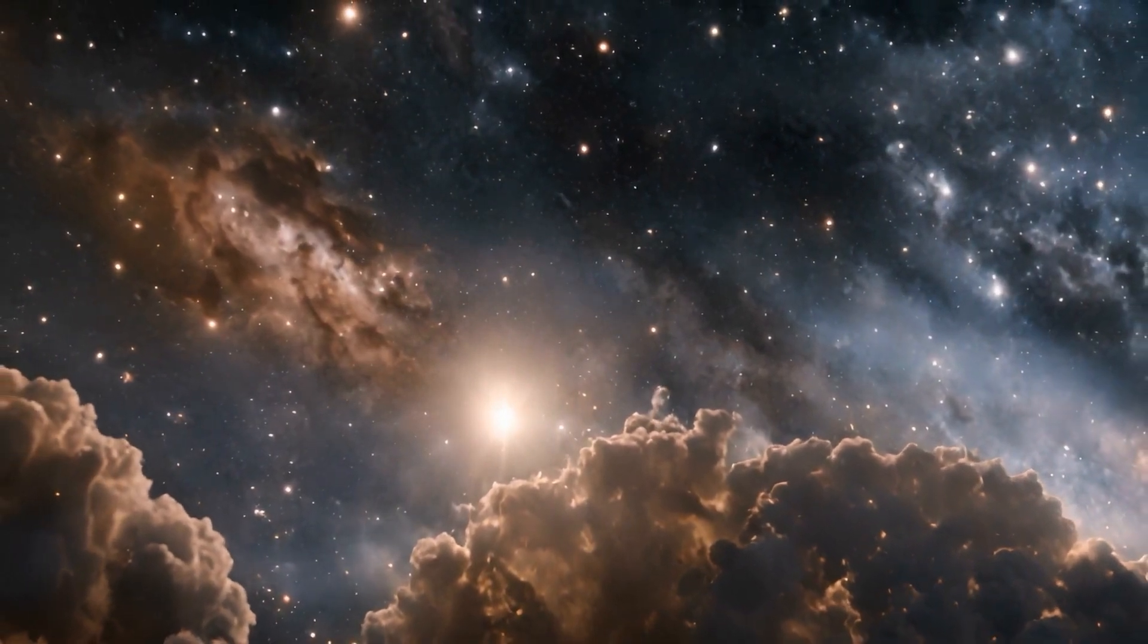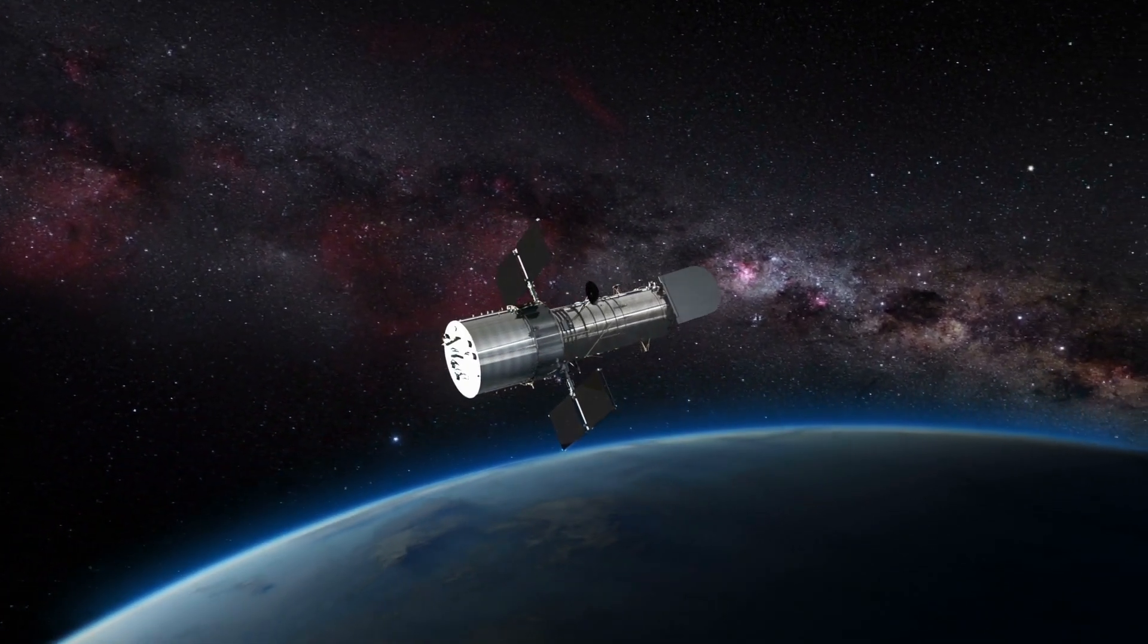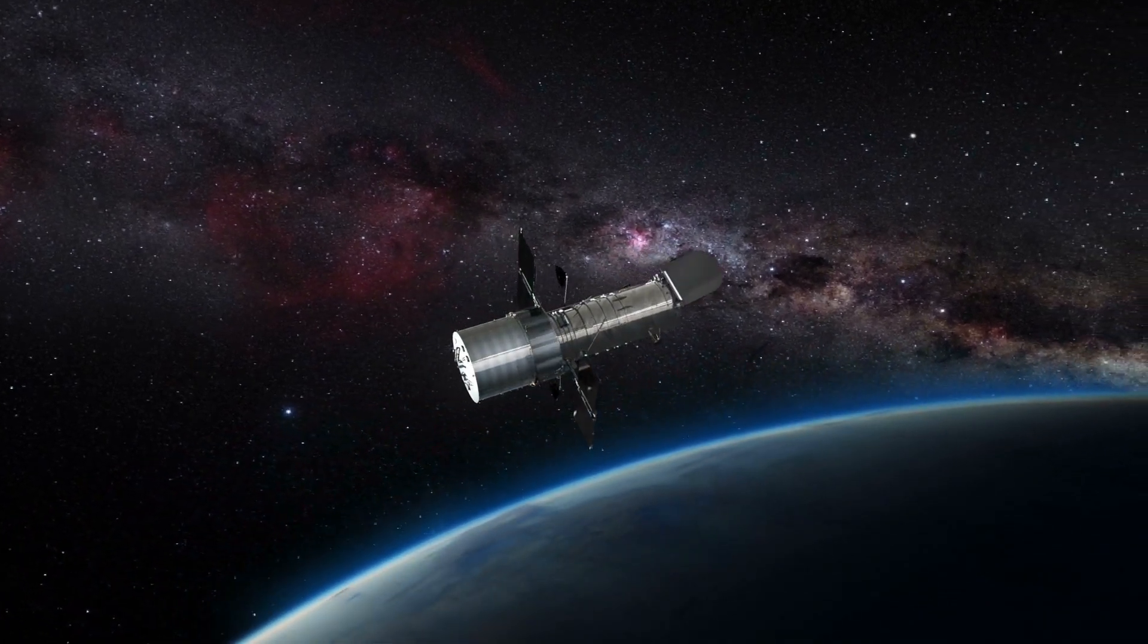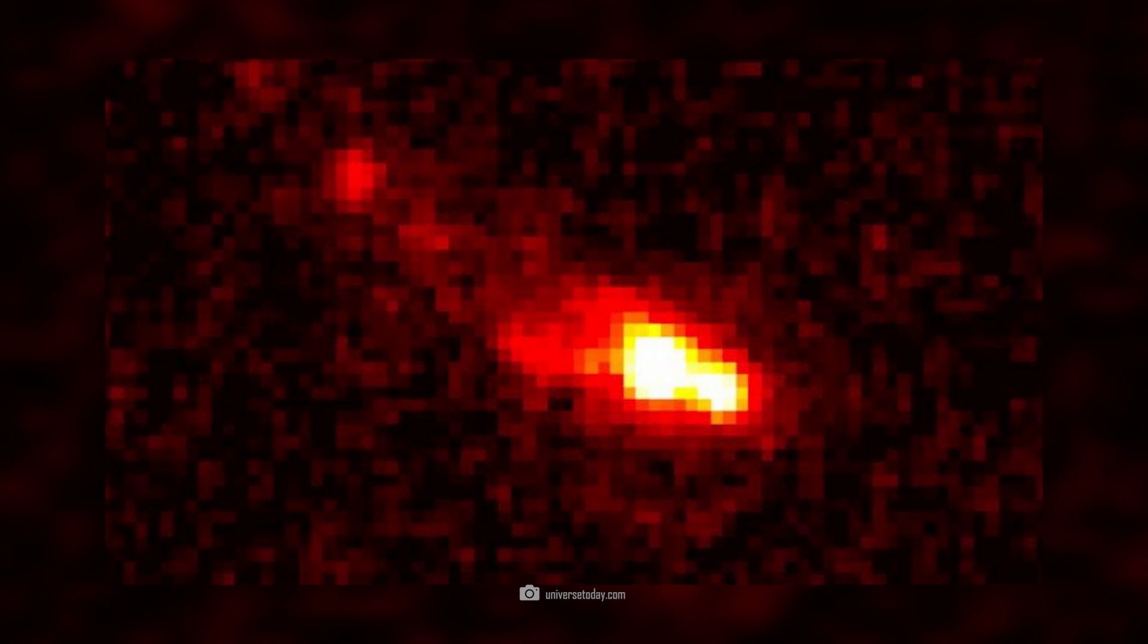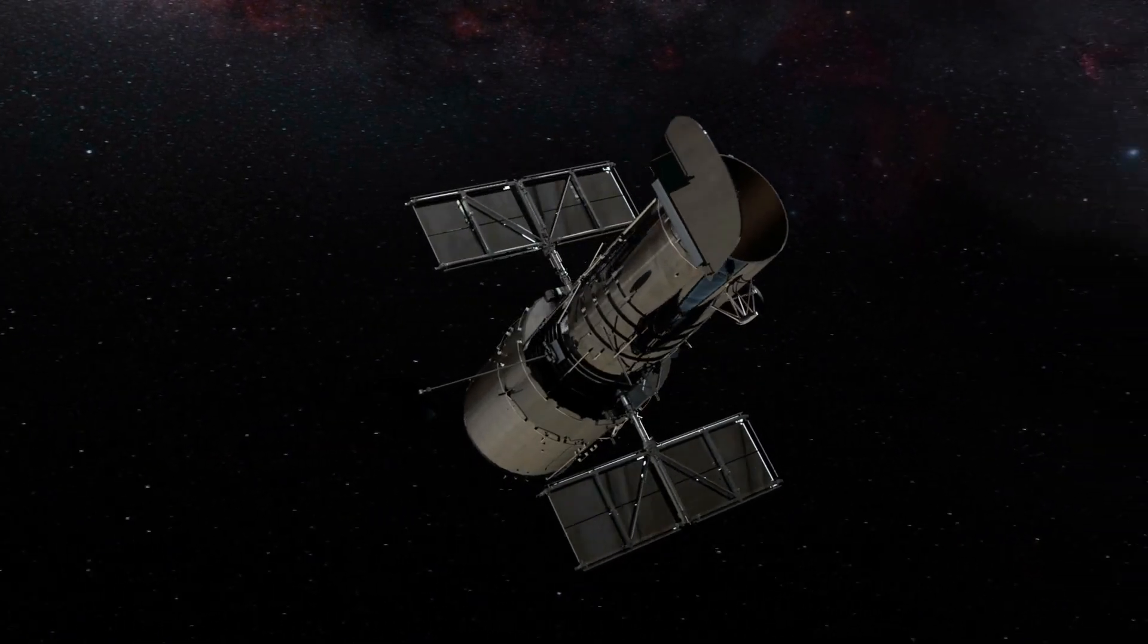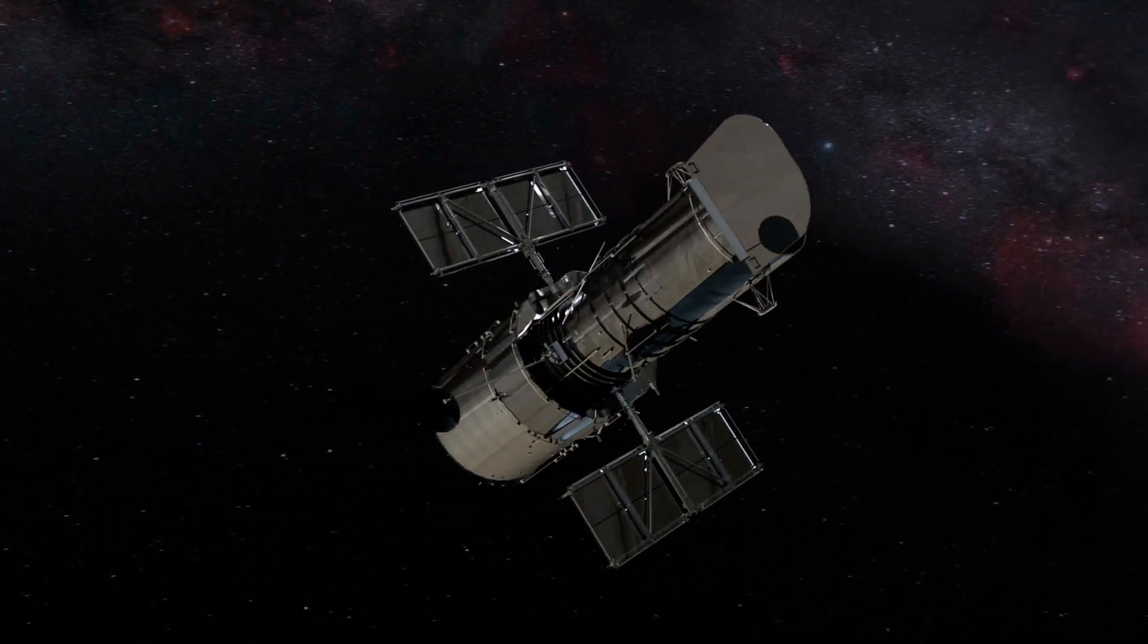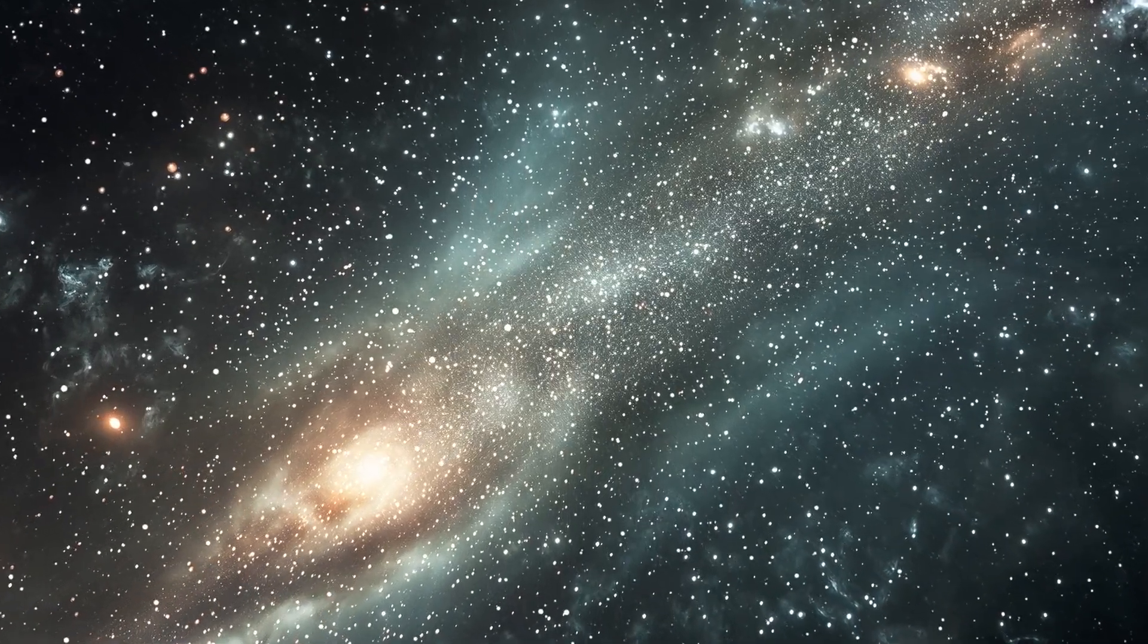Even the old Hubble Space Telescope discovered some suspicious points of light in the early universe. One of these discoveries was the galaxy known as GZ9P3. Hubble only recognized the galaxy as a very vague spot of light, which was undoubtedly there, but did not allow any more precise analyses.